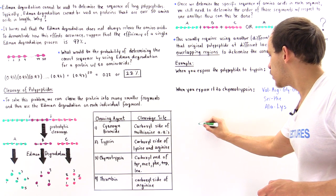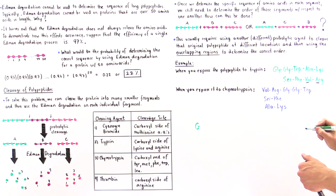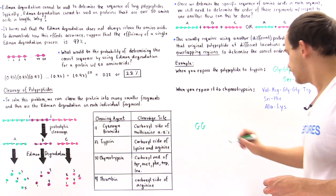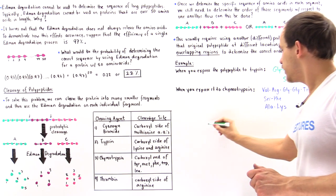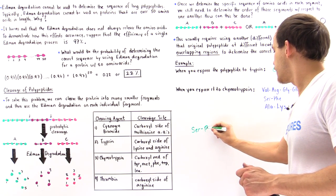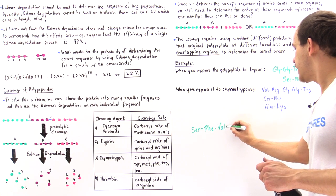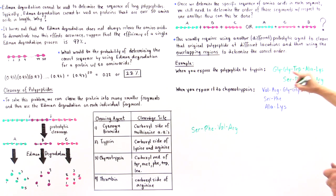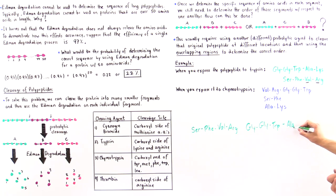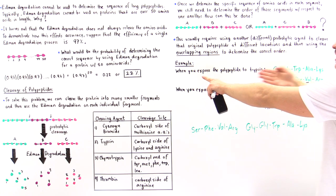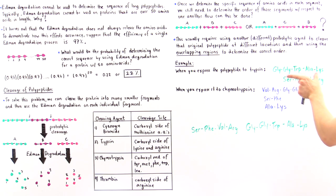Let's lay this out. Segment one from trypsin is: serine, phenylalanine, valine, arginine. Segment two is: glycine, glycine, tryptophan, alanine, lysine. If we only carry out this procedure once, we don't know which segment comes first. But the overlapping region information allows us to determine which one goes where.